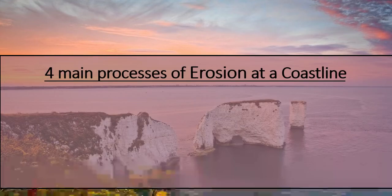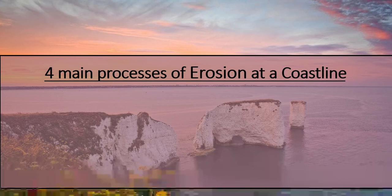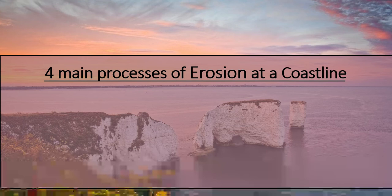Right, we're going to look at the four main processes of erosion at the coastline. There are four processes of erosion and four processes of transportation — that's what we're going to look at, and you'll understand both by the end of the video, hopefully.